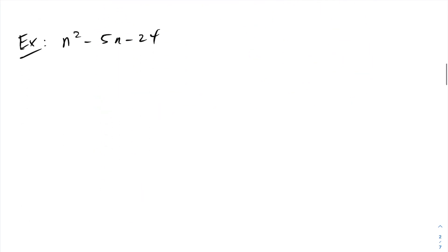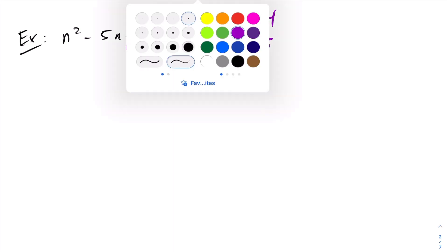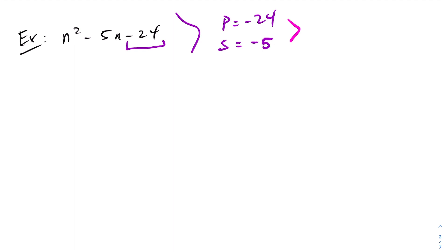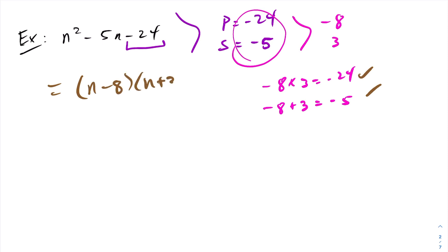Let's try another. We have a simple trinomial. The product here is negative 24 — notice I take the sign with it. Likewise, the sum is going to be negative 5. I need two numbers that multiply to be negative 24 and add to be negative 5. Those numbers are negative 8 and 3: negative 8 times 3 is negative 24, and negative 8 plus 3 is negative 5. So this factors into n minus 8 times n plus 3.